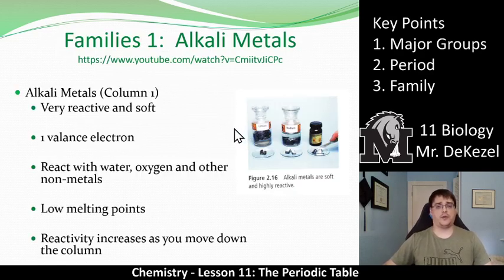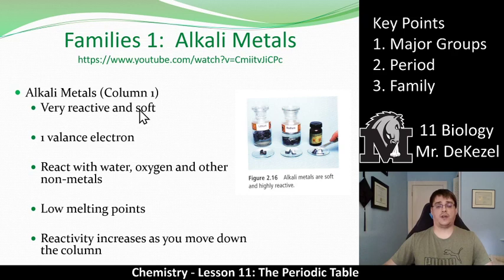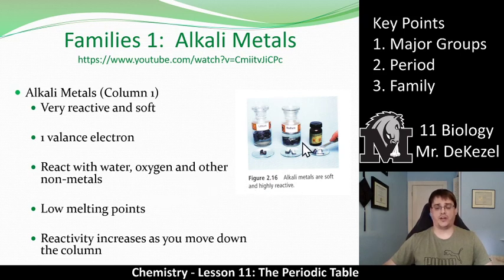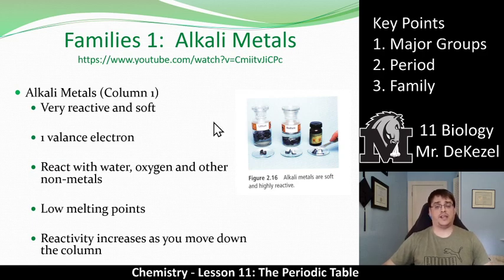One family we want to talk about is the alkali metals — column 1. These are hydrogen, lithium, sodium, potassium, rubidium, cesium, and francium. The alkali metals are very reactive and very soft. Sodium you can essentially squish with your hands. They all have one valence electron because they're in the first column, and they all react with water, oxygen, and other non-metals, so they have to be kept in oil. They have low melting points, and their reactivity increases as you go down the column towards francium. Check out the YouTube video to see some of these reactions with water — they can get pretty exciting.